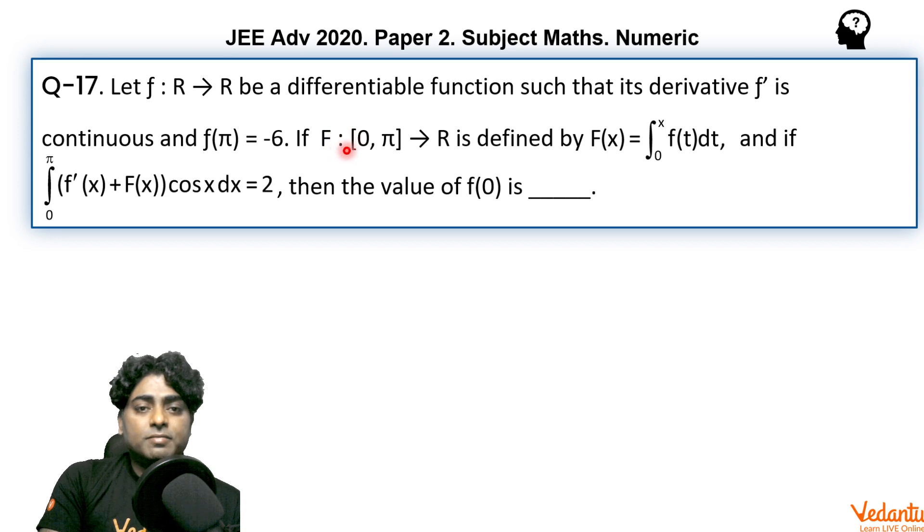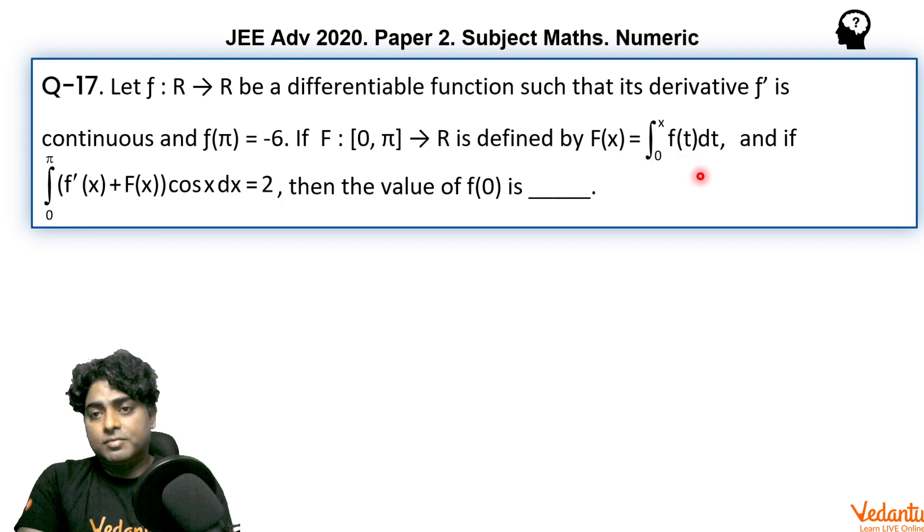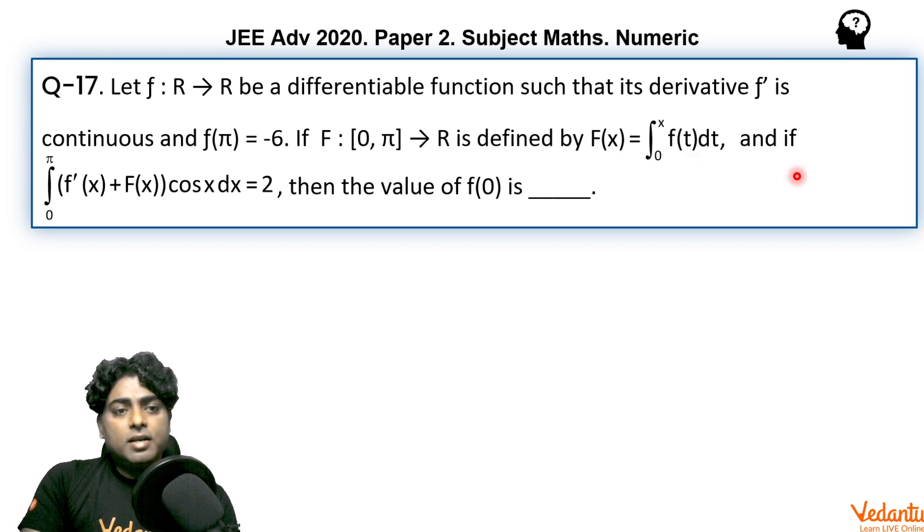If F(x), which is another function from [0,π] to R, is defined by F(x) = integral from 0 to x of f(t)dt. Basically F is the integral of f, or we can say the derivative of F would be f(x). And if integral from 0 to π of (f'(x) + F(x))cos(x)dx = 2, then find the value of f(0).